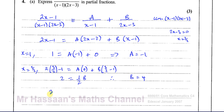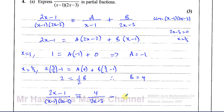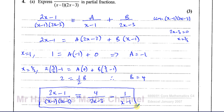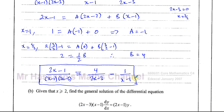So now we can say: (2x minus 1) over (x minus 1)(2x minus 3) is identically equal to 4 over (2x minus 3) minus 1 over (x minus 1). That's what we had to do for part A — write the expression as partial fractions, split up into two separate fractions.